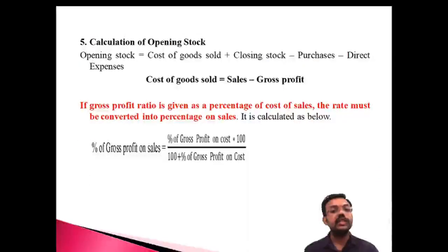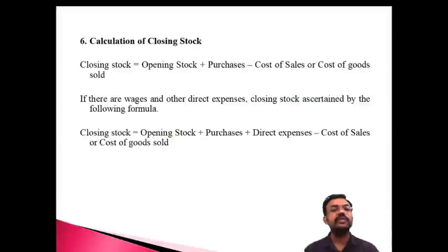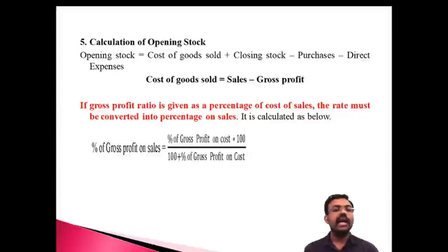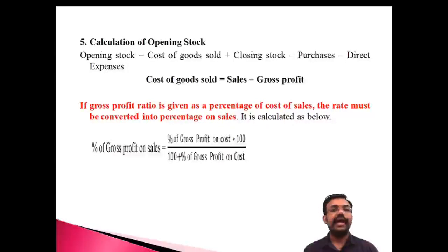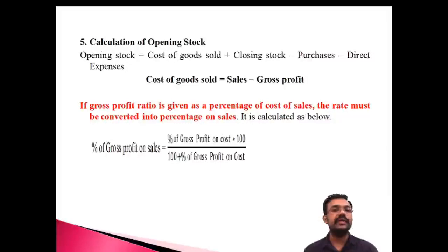One important element is the calculation of the opening stock and the closing stock. The formula for opening stock is: Opening Stock = Cost of Goods Sold + Closing Stock − Purchases − Direct Expenses.